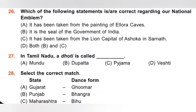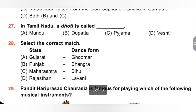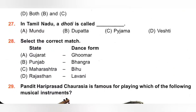28th. Select the correct match. A. Gujarat — Ghoomar: incorrect, the dance form of Gujarat is Garba. B. Punjab — Bhangra: correct match. C. Maharashtra — Bihu: incorrect, the dance form of Maharashtra is Lavani. D. Rajasthan — Lavani: incorrect, the dance form of Rajasthan is Ghoomar. Only option B is the correct match — the dance form of Punjab is Bhangra. Option B is the correct answer.